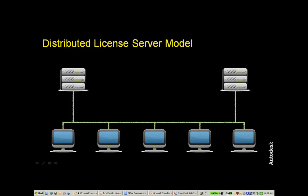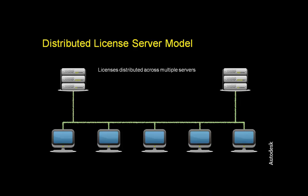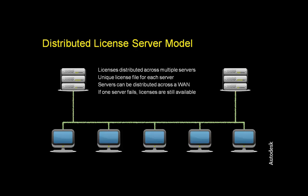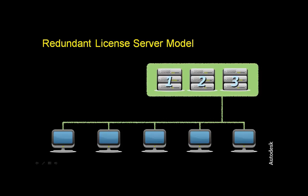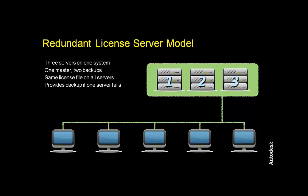A distributed license server model means you can distribute licenses across multiple servers. You need to obtain a unique license file for each server. Servers cannot be distributed across the WAN, but if one server fails, licenses are still available on the other servers. If you choose the redundant license server model, you'll need to use three servers — one master and two backups. The same license file is needed for all servers, and if one server fails, the other two operational servers will continue to distribute the licenses. They must be on the same subnet and in close proximity.